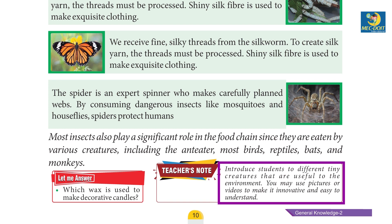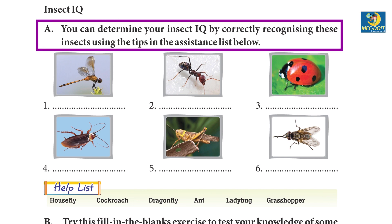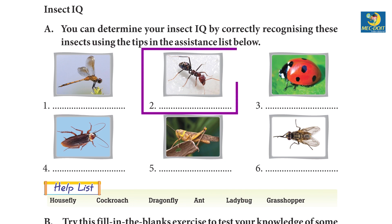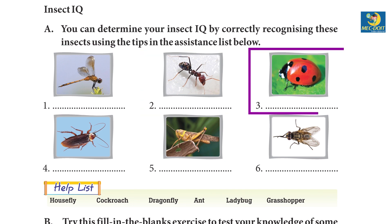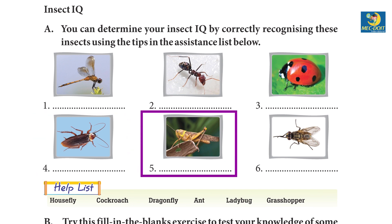Insect IQ — Part A: You can determine your insect IQ by correctly recognizing these insects using the tips in the assistance list below. One: dragonfly. Two: ant. Three: ladybug. Four: cockroach. Five: grasshopper. Six: house fly.